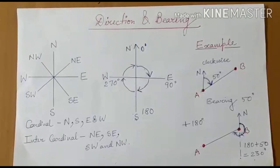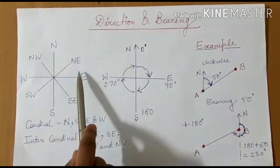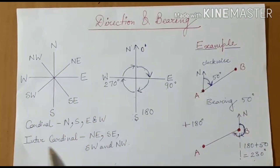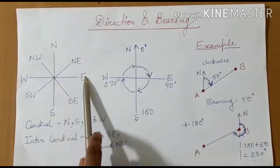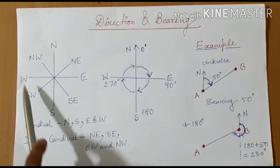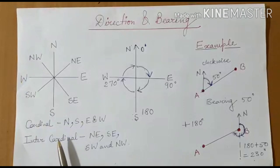Welcome students. In the previous module we learned about direction and bearing. As a revision, there are four cardinal directions: north, south, east, and west. There are also four intercardinal directions: northeast, southeast, southwest, and northwest. These are the four cardinal and intercardinal directions.